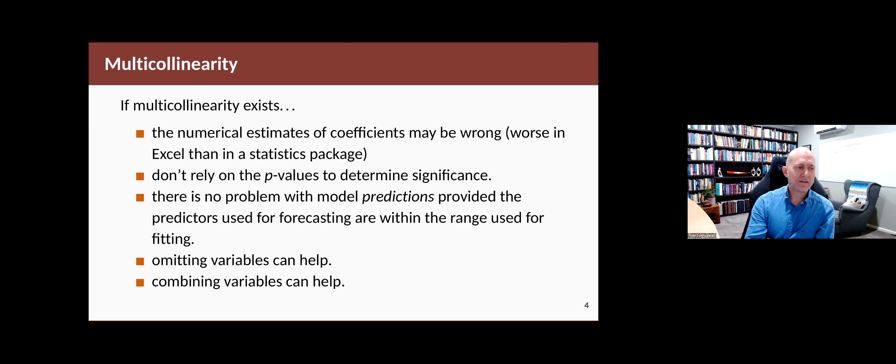So as long as that's not the case, as long as your future values of the predictor are within the historical range and it's not an exact collinearity, then it's probably fine for forecasting purposes, even if it's not good for other types of statistical inference.